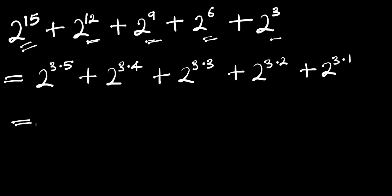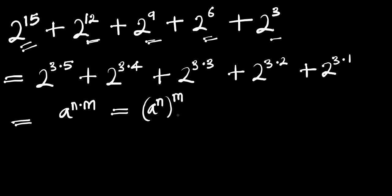Now the next thing we are going to do is to apply this identity: if you have a to the power of n times m, this equals a to the power of n, all to the power of m. So let's apply it here — we are going to have 2 to the power of 3...